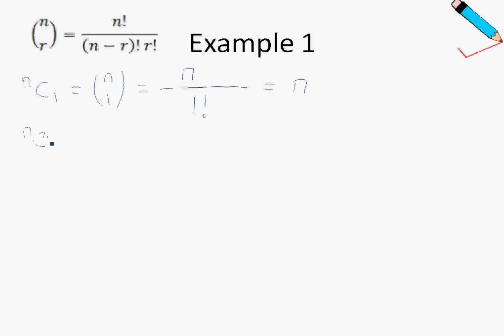Next one: n choose 2. So n choose 2, once again, in the denominator, the number that I see will be this number with a factorial sign. So in this case, it's 2 factorial.